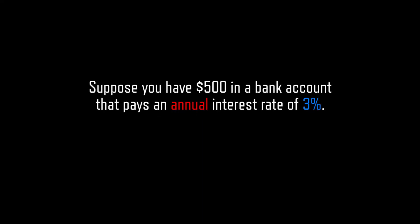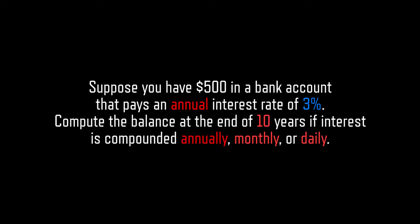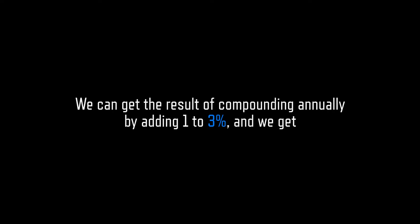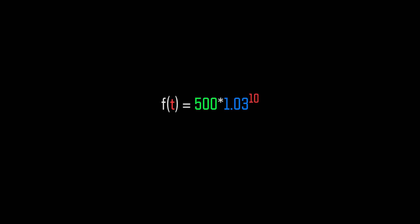Let's do a question. Suppose you have $500 in a bank account that pays an annual interest rate of 3%. Compute the balance at the end of 10 years if interest is compounded annually, monthly, or daily. For annually, we add 1 to 3% and get f(t) = 500 times 1.03 to the power of 10, which gives you $671.95.